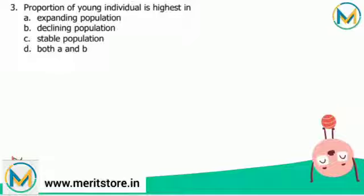Next question: the proportion of young individuals is highest in which type — expanding population, declining population, stable population, or both expanding and declining? The more the number of individuals in a population, the more the chances of producing offspring. Young individuals are in their reproductive age and decide the future of the population. As a result, there will be more births, the birth rate will exceed the death rate, leading to population explosion. The correct answer is option A — only an expanding population.